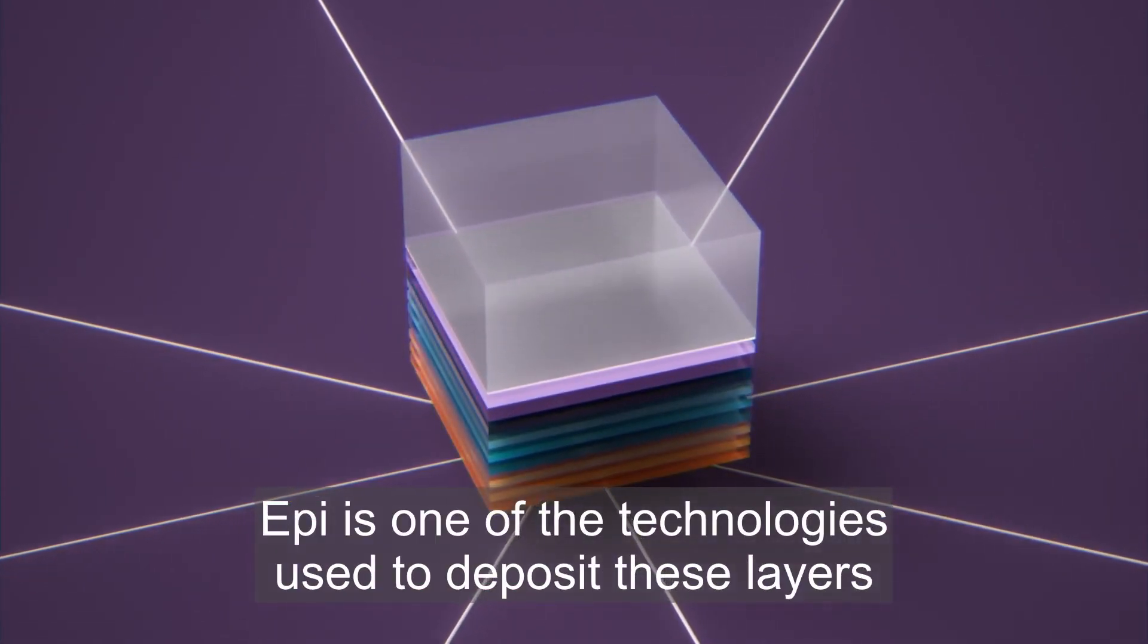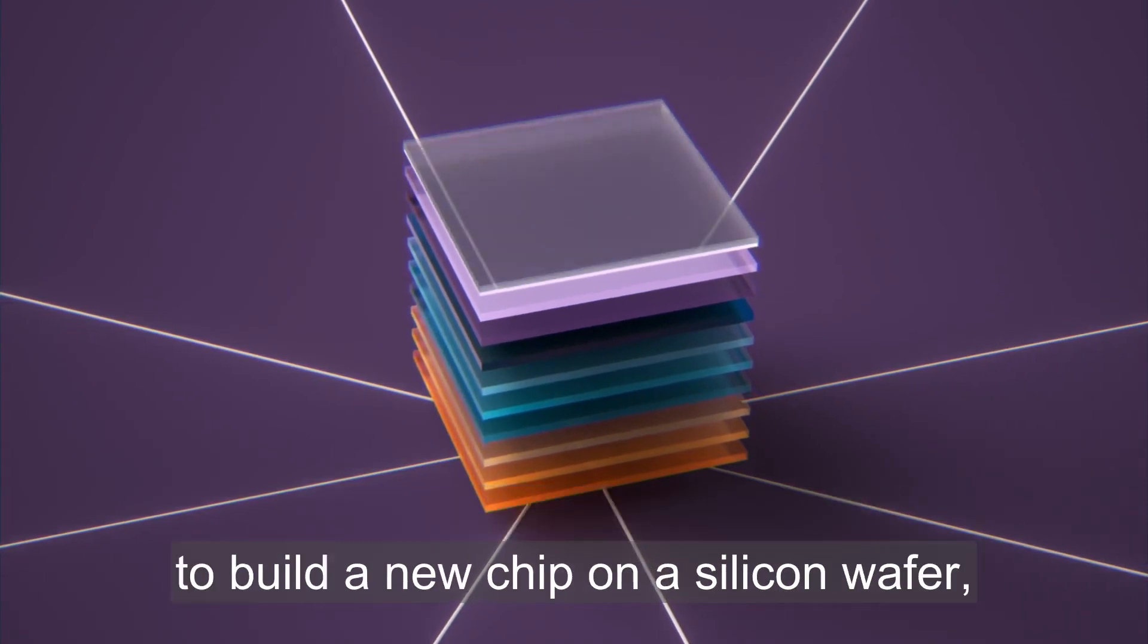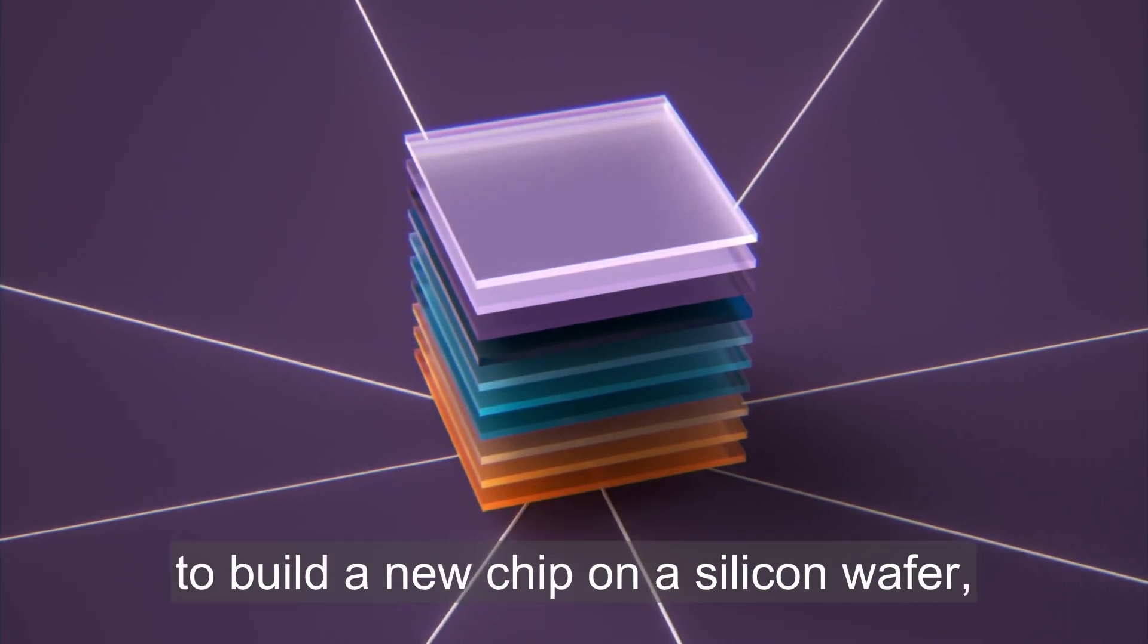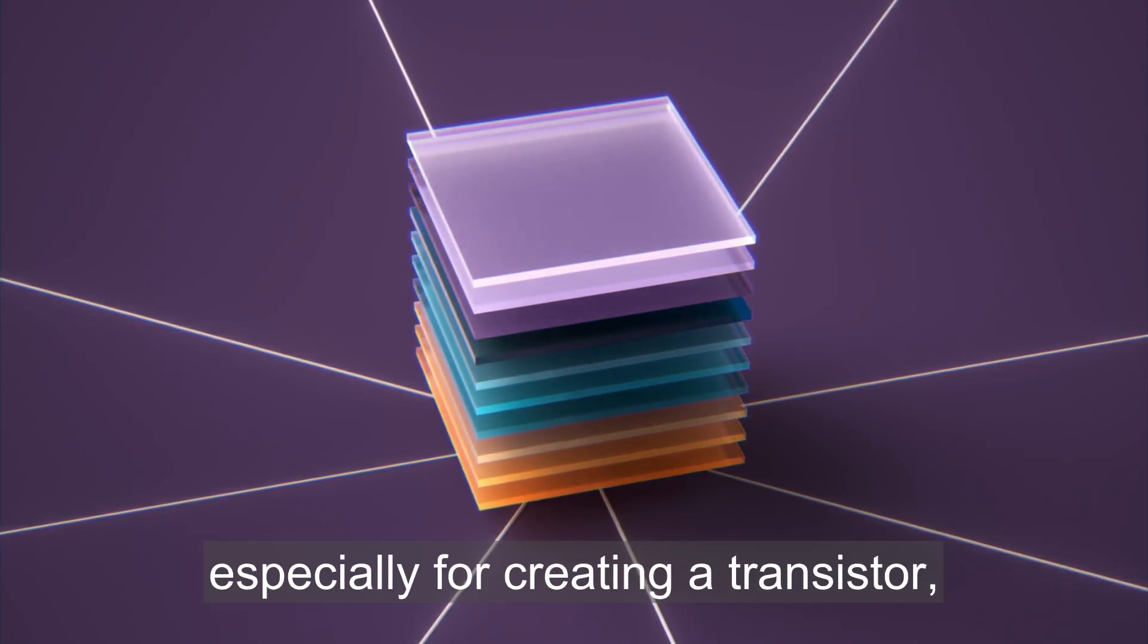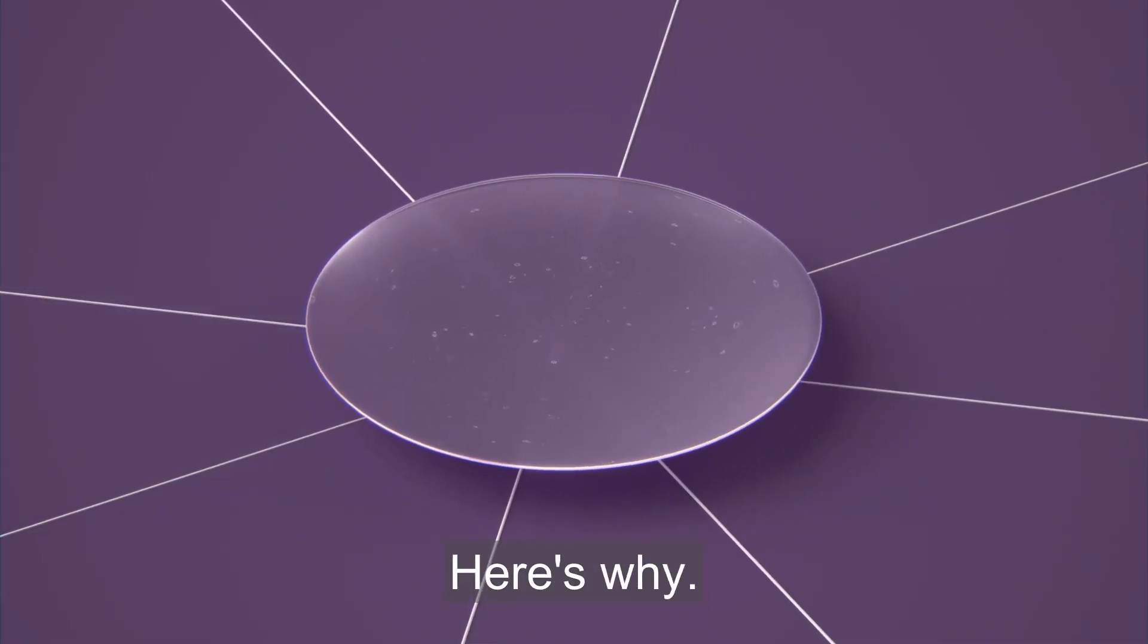Epi is one of the technologies used to deposit these layers to build a new chip on a silicon wafer, and it's a super important one, especially for creating a transistor which defines the device. Here's why.